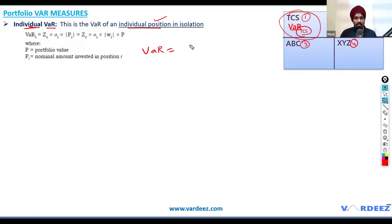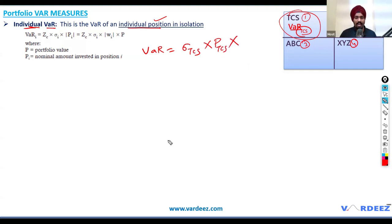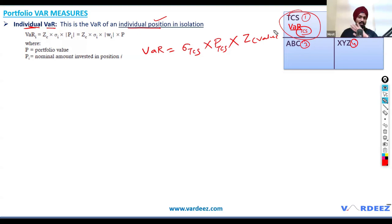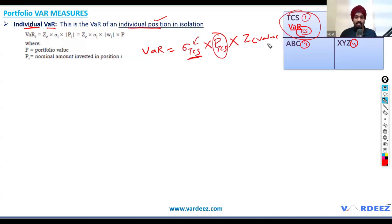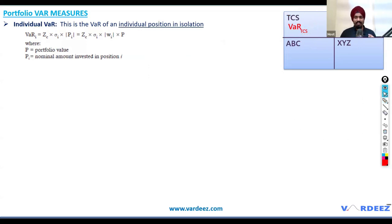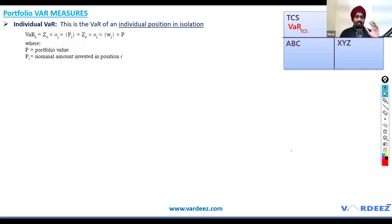How do I calculate individual VAR? You take the standard deviation of TCS, the amount invested in TCS, and multiply by the Z critical value. Do not confuse this with the Chapter 1 formula with mu minus sigma — this is the portfolio-level formula. Given these numbers, you can calculate the individual VAR for TCS alone.